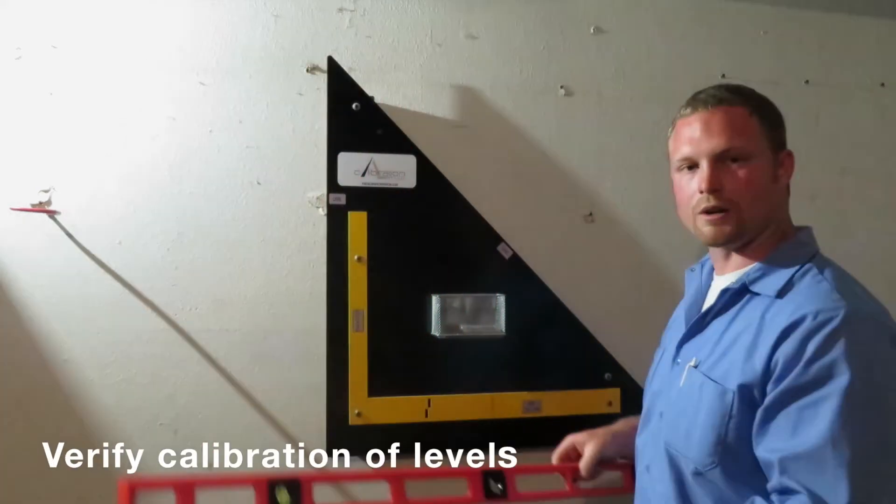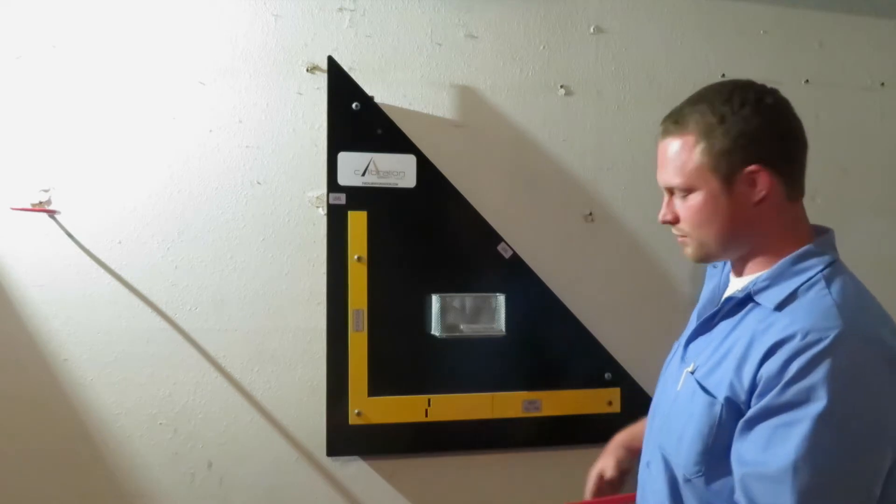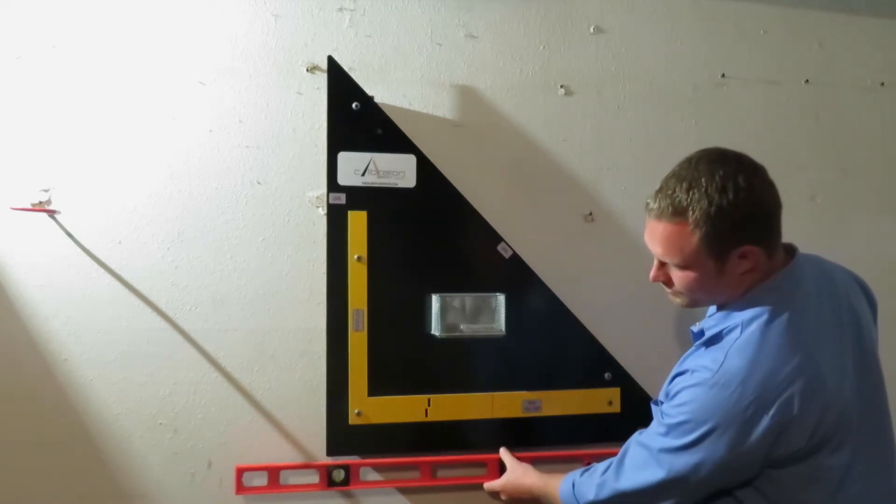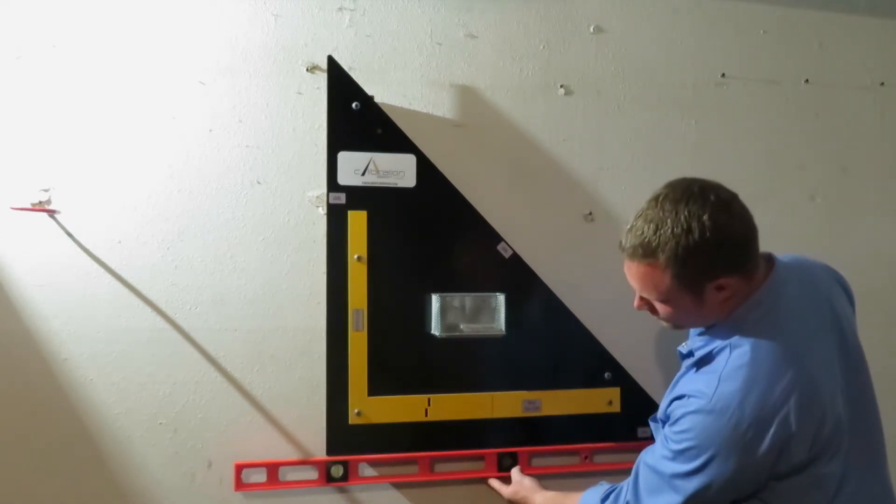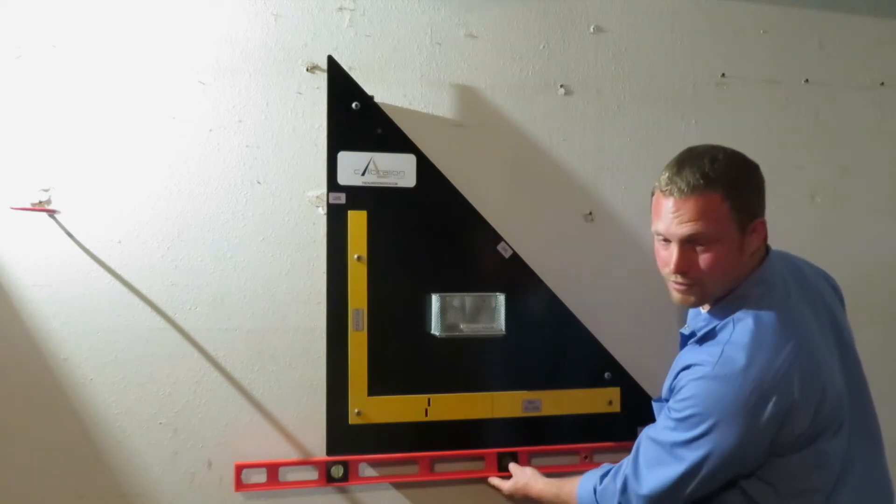So we'll start out with the level. For horizontal level, you'll place it at the bottom of the calibration station and confirm that the bubble is within spec.